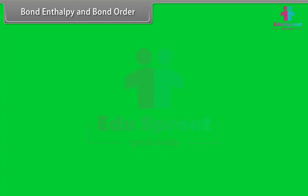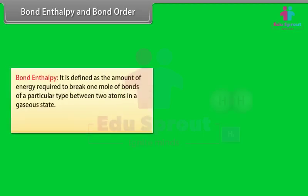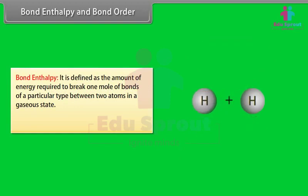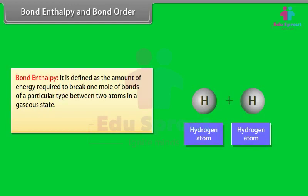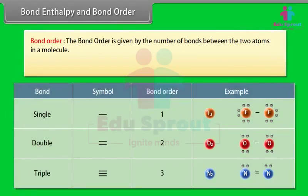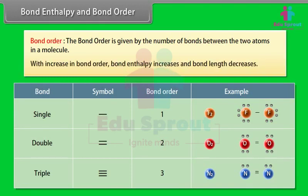Bond enthalpy is defined as the amount of energy required to break one mole of bonds of a particular type between two atoms in a gaseous state. The unit of bond enthalpy is kilojoule per mole. Bond order is given by the number of bonds between two atoms in a molecule. With increase in bond order, bond enthalpy increases and bond length decreases.